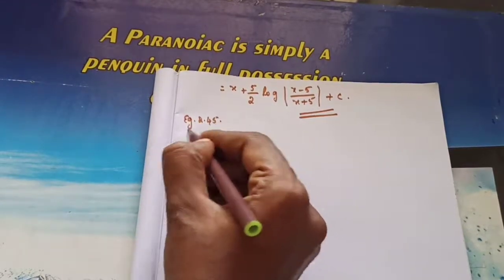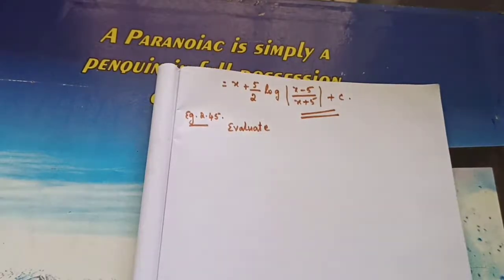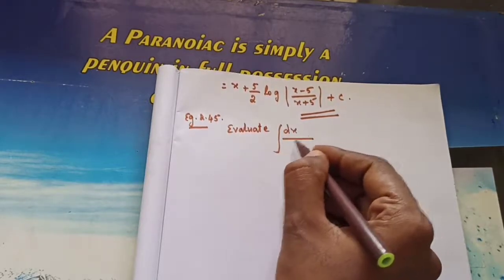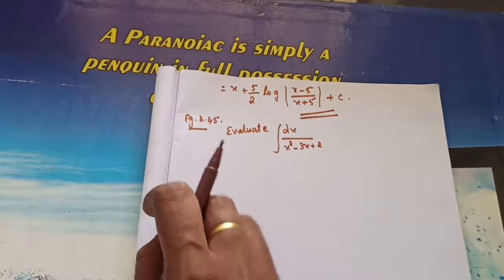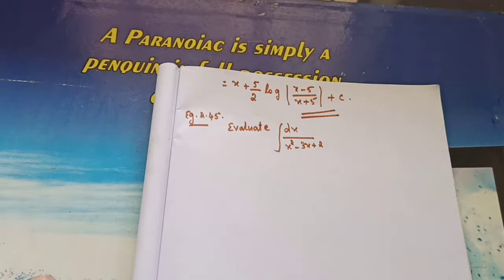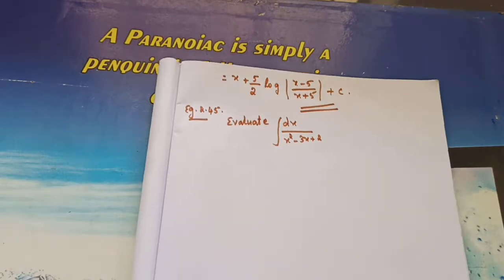Example 2.45: Evaluate integral of dx divided by (x² minus 3x plus 2). So already we have completed one problem like this. If the denominator is a quadratic equation, we need to solve by using the completing the square method. In 10th standard you have learned completing the square. If you are not thorough in that section, it will be very difficult for you. So please be thorough with it.